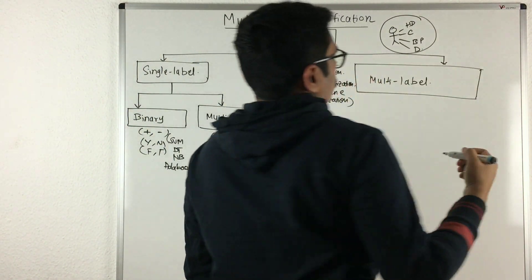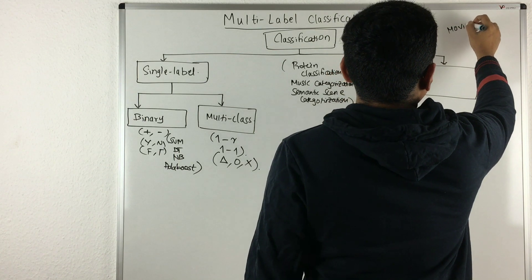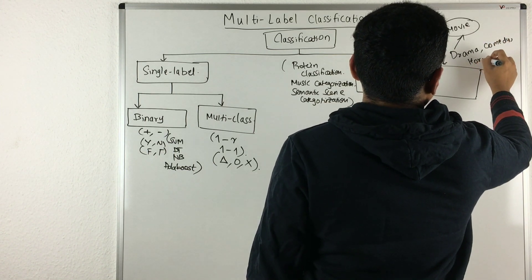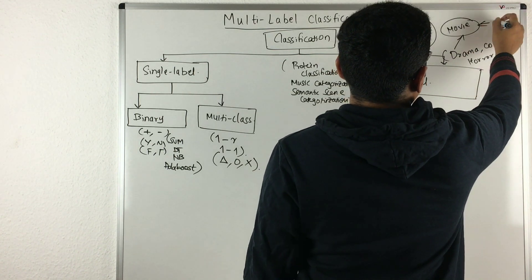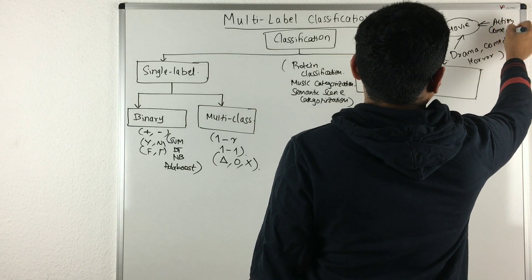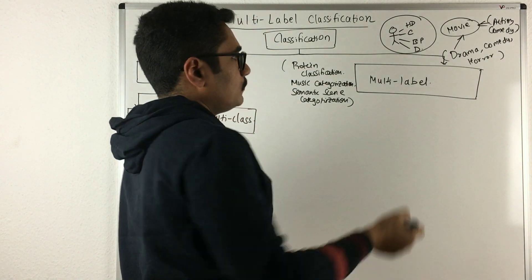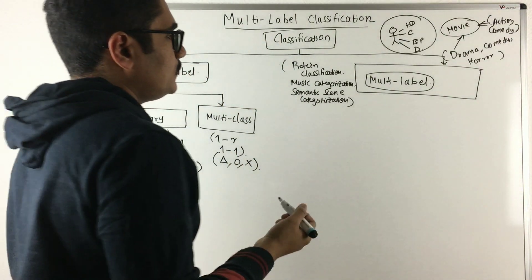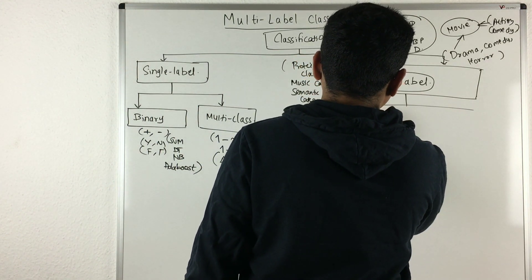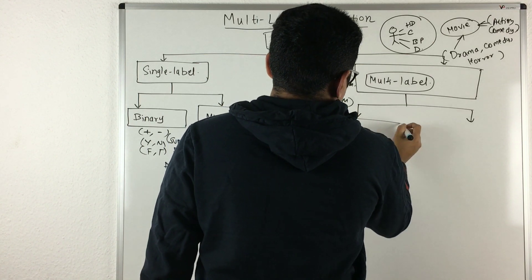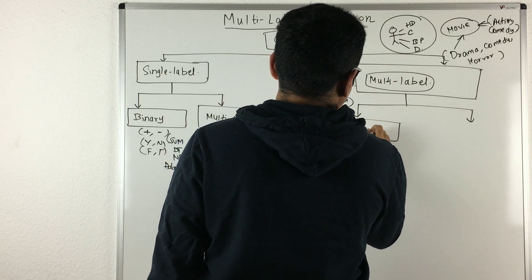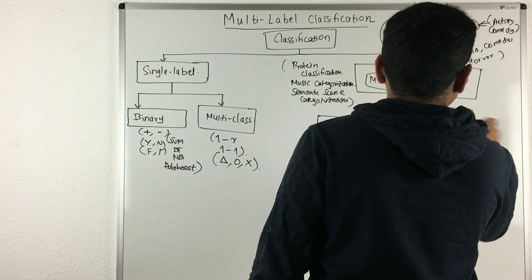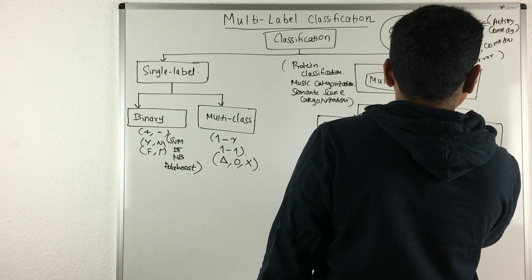When you go to watch a particular movie, it can be a drama movie as well as a comedy movie, or it can be horror — so it could be a horror-comedy-drama, or action and comedy, or action and horror. A particular movie can be associated with more than one label, and that's where the idea of multi-label classification comes into picture. There are broadly two categories under multi-label classification: problem transformation methods and algorithm adaptation methods.